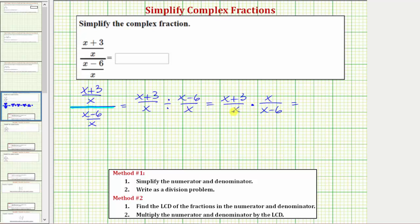Before multiplying, notice how we have a common factor of x between the numerator and denominator which would simplify to one. So now multiplying, we have a numerator of x plus three and a denominator of x minus six. This is the simplified form of the complex fraction.